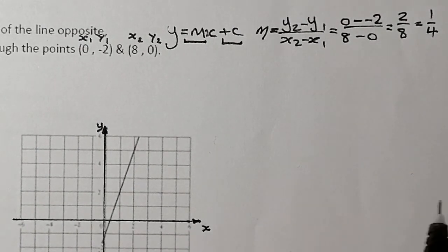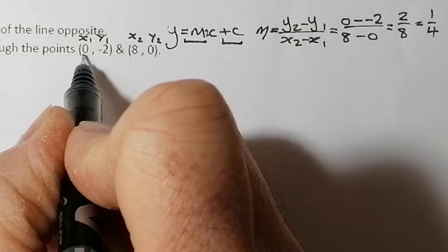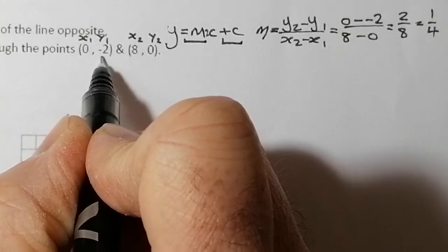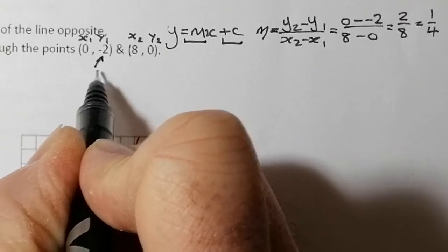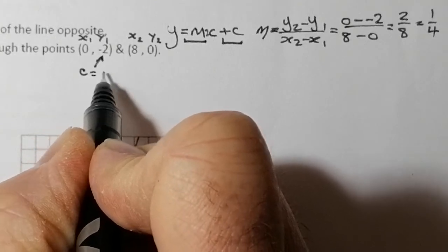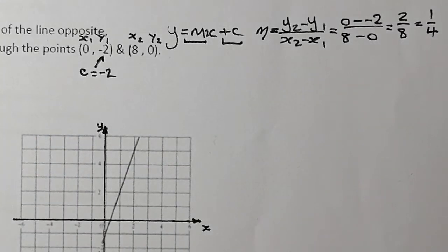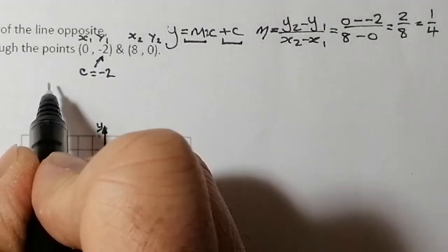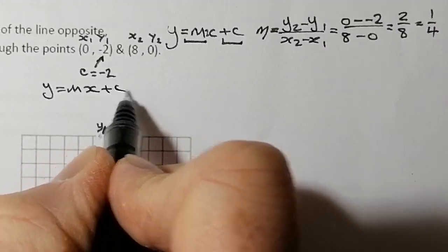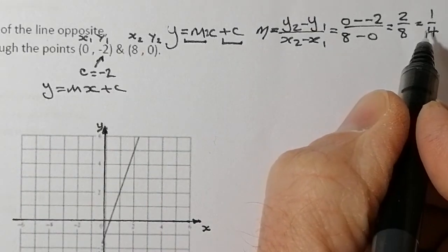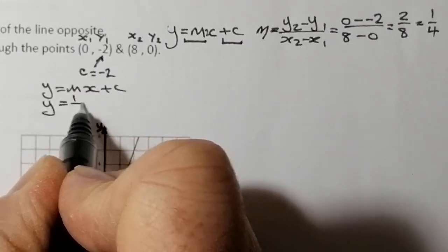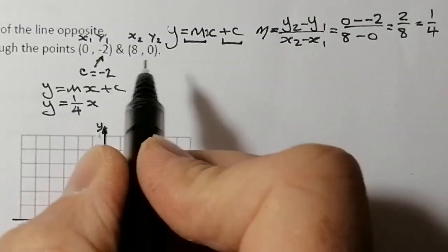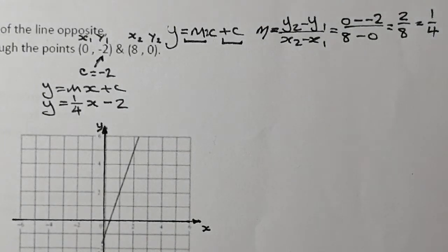There are a couple of different options we can use here. The first thing I can see is that the point (0, -2) tells me where the line crosses the y-axis, so directly I can see that c = -2. I can substitute my gradient into y = mx + c, giving y = ¼x - 2. That's the equation of my line.